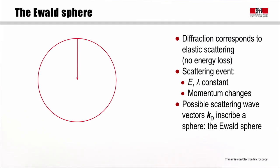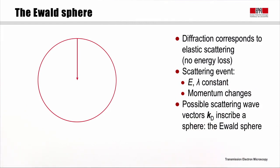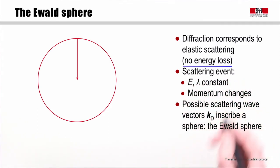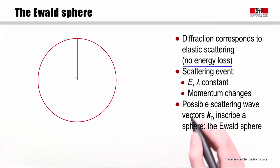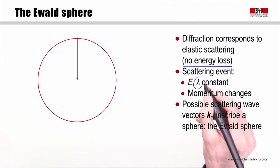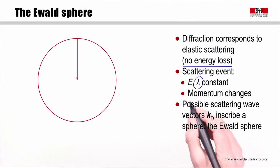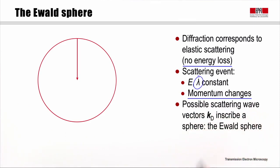To understand the Ewald sphere we're going to consider that electron diffraction corresponds to elastic scattering. The incident electron beam is diffracted by the Coulomb field of the sample and during this diffraction event there is no energy loss. Therefore, the energy of the electron beam and hence its wavelength both remain constant. However, as we have already seen, there is a momentum change during diffraction.